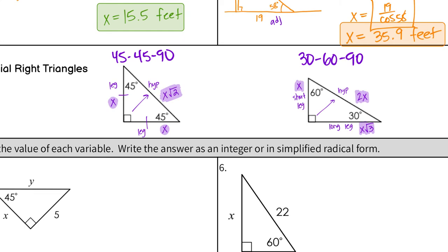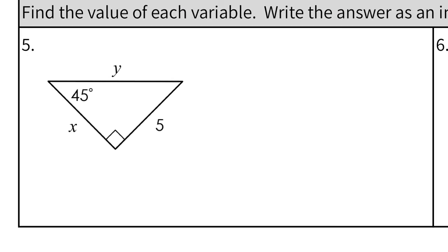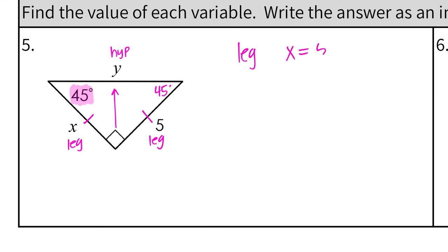We have one example of each. We're not using the calculator this time because we want whole numbers or square roots. The first triangle is a 45-45-90 because it has a 45-degree angle marked. In this type, the legs are always the same. One leg is 5, so X equals 5. For the hypotenuse Y, take that 5 and multiply by square root of 2, so Y equals 5 square root of 2.